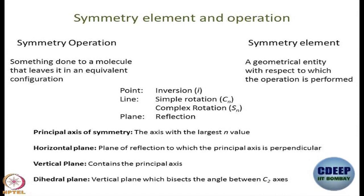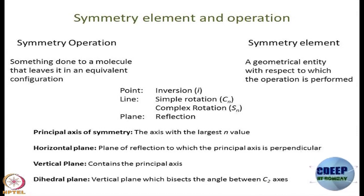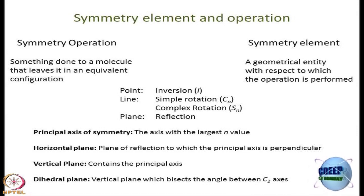With a line, you turn. If you can simply turn, that is called simple rotation. Or you can turn and then do a reflection — that is called an axis of alternating rotation. It is written as CN, where N stands for the angle by which you rotate: 360 degrees divided by N. Complex rotation means you rotate by 360/N and then do a reflection along a plane to which this axis is perpendicular. And for a plane — perhaps the easiest to understand — you do a reflection.